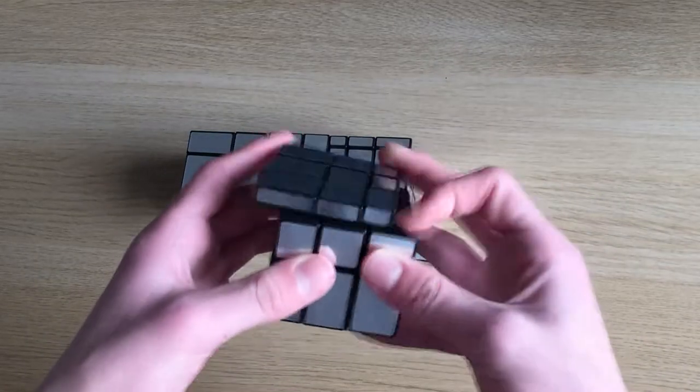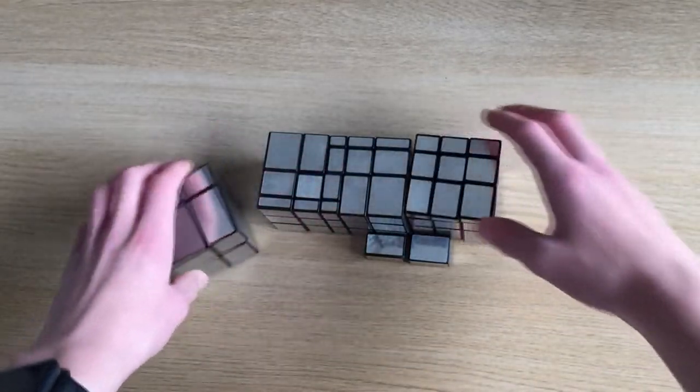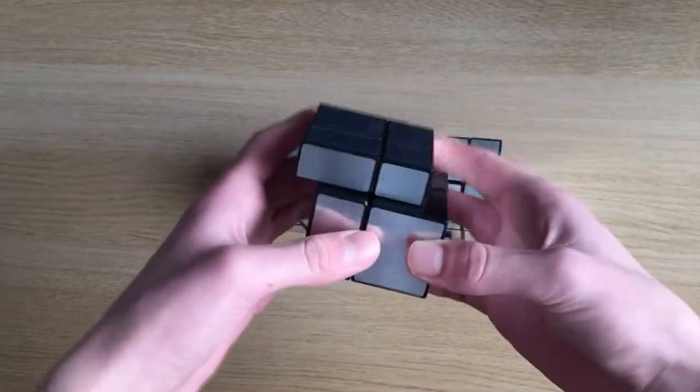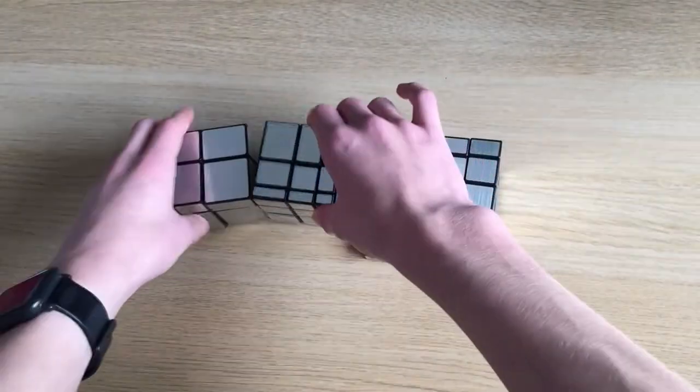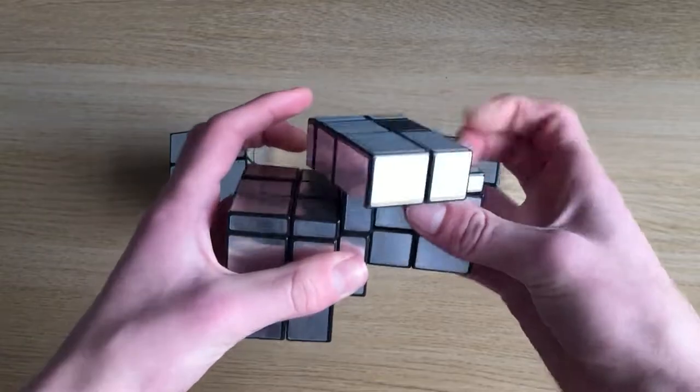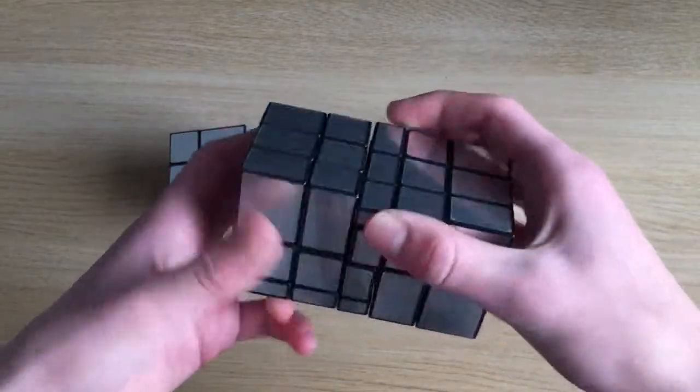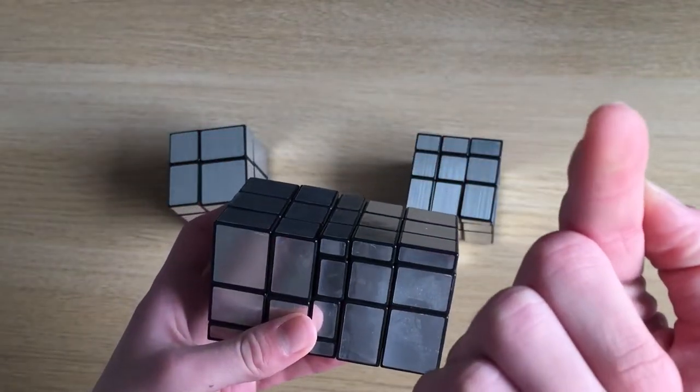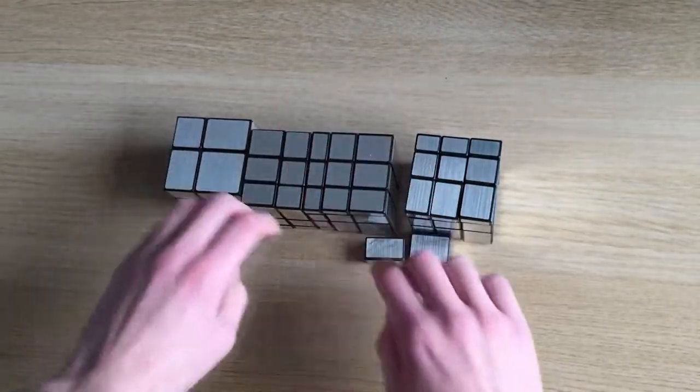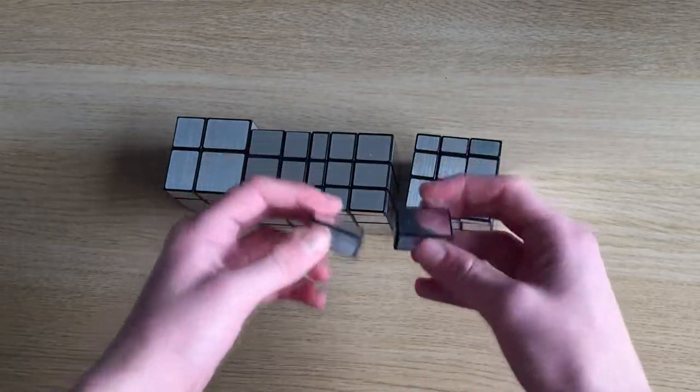For my mirror puzzles, I have a mirror blocks 3x3. A 2x2 mirror blocks. My Siamese mirror cube, which is two mirror cubes joined together. I have a video on that, which I'll link here. And I also have two 1x3 mirror cubes.